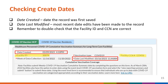Once data are saved in NHSN, a date created field will be auto-generated and displayed on the data entry screen. Date created represents the date and time that your COVID-19 vaccination summary data was first successfully saved in NHSN. In this example, a create date of March 9, 2023 indicates that data was first submitted for that particular reporting week on March 9, 2023. Additionally, a date last modified field will also be auto-generated, indicating the most recent date that updates were made to the submitted data — in this example, March 16, 2023.